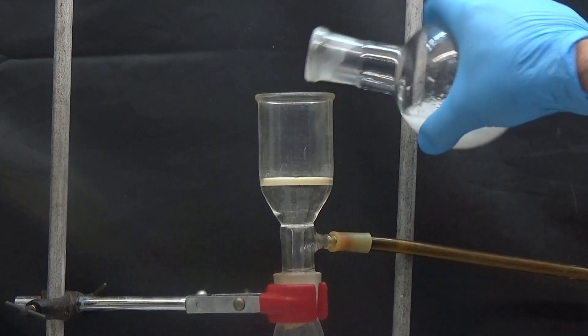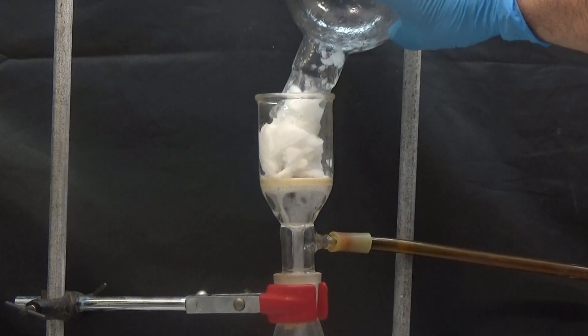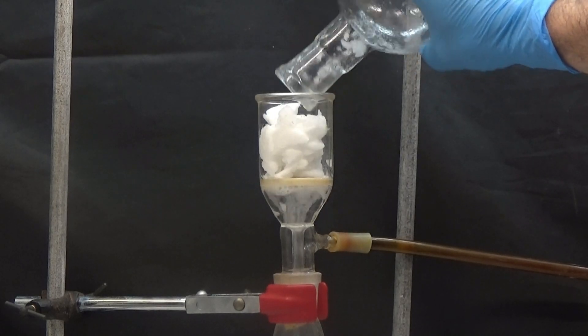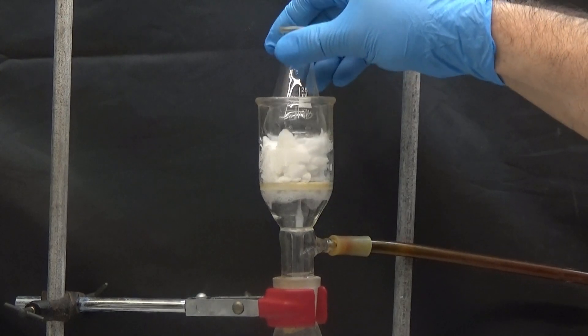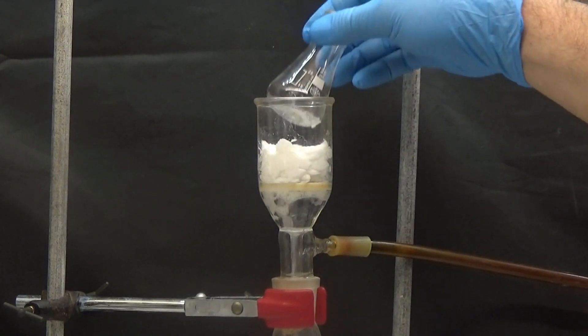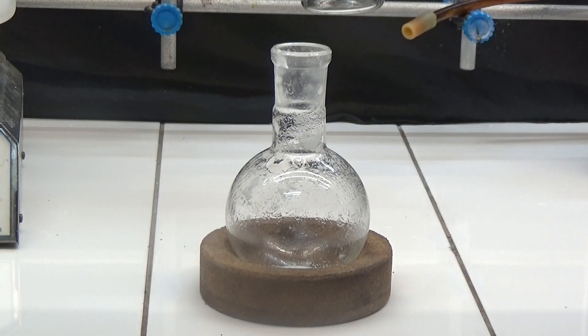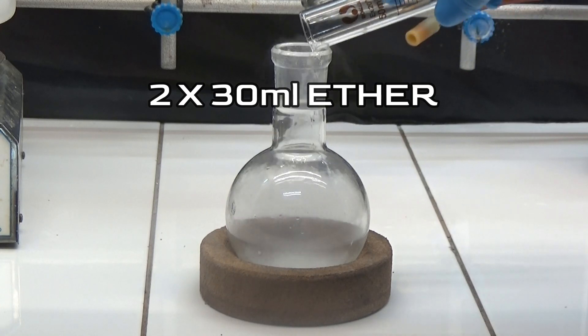The white solid is collected by suction and then compacted by pressing it. We use twice 30 milliliters of ether to wash both the flask and the solid in the funnel twice.